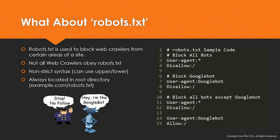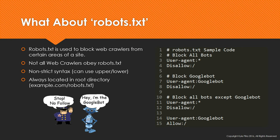As a webcrawler crawling around the web and using all these websites, there's got to be some way for the website owner to tell all these different bots where they can go and where they can't go. That way is the robots.txt file, which is just a file found in the root directory of almost all websites. If you go to google.com/robots.txt, or wikipedia.com/robots.txt, or facebook.com/robots.txt, you'll find a file that looks like this on all of those sites.